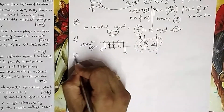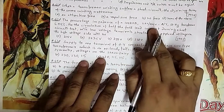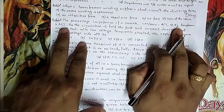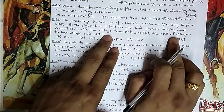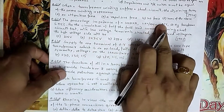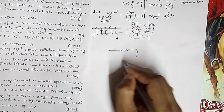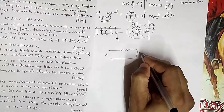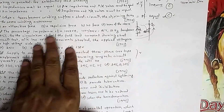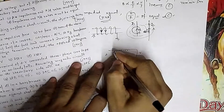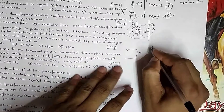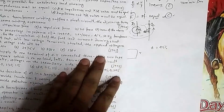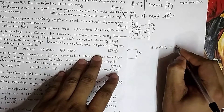Question 62: The percentage impedance of a 100 kVA, 11kV/400V, delta-star, 50 Hz transformer is 4.5%. For the circulation of half full-load current during the short circuit test with the low-voltage terminal shorted, we need to find the applied voltage on the high voltage side. The low voltage is star and high voltage is delta. Referring all windings to the delta (primary) side, Z equals 4.5%.